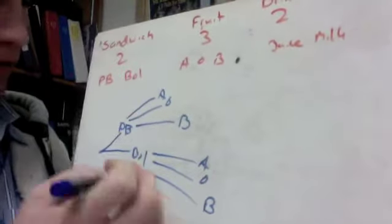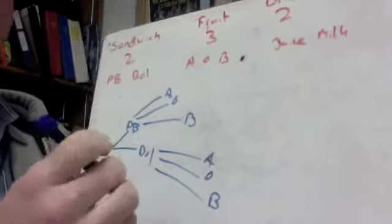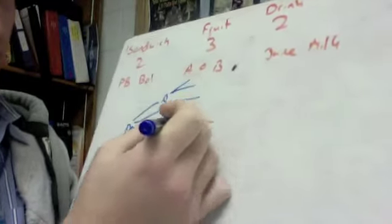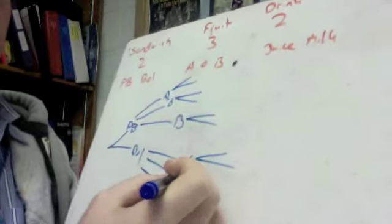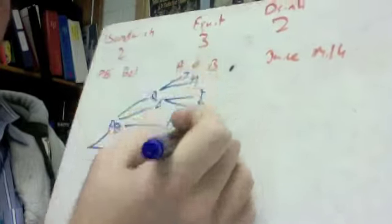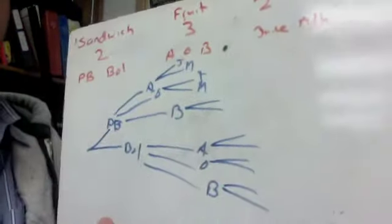Now no matter what we took for a fruit, we had two choices for drinks. So each fruit item should have two drink choices coming out of it here. And we'd have juice and milk, juice and milk, and I could fill that J and that M all the way down.